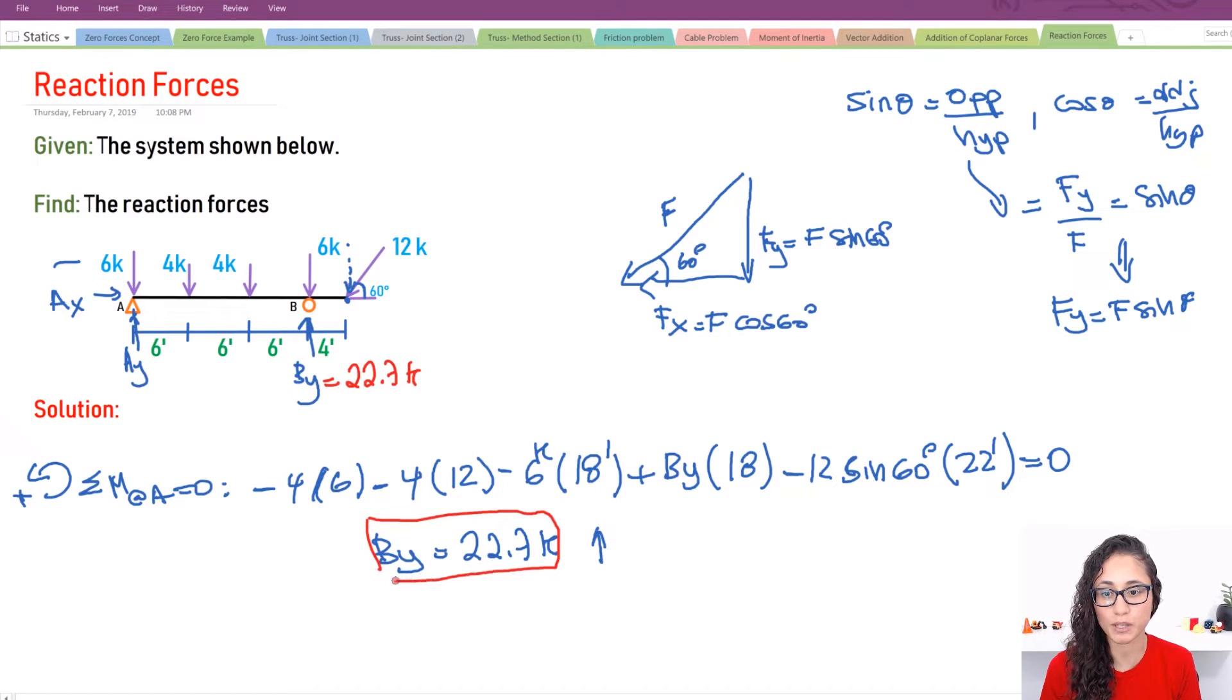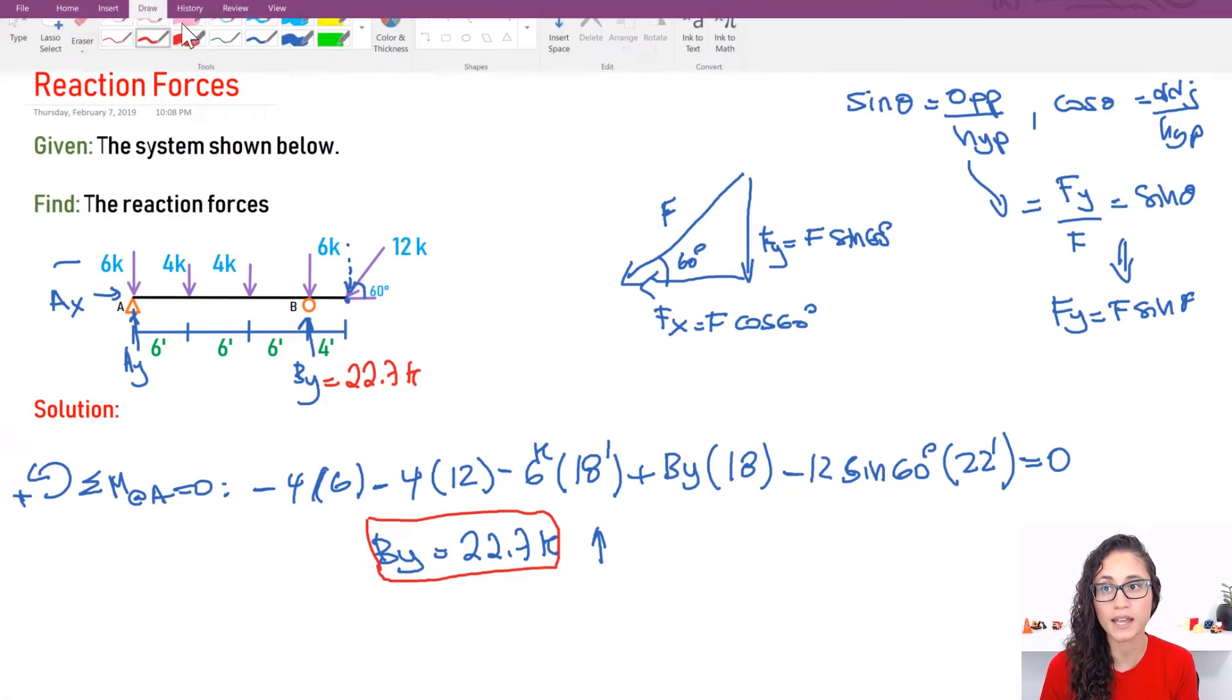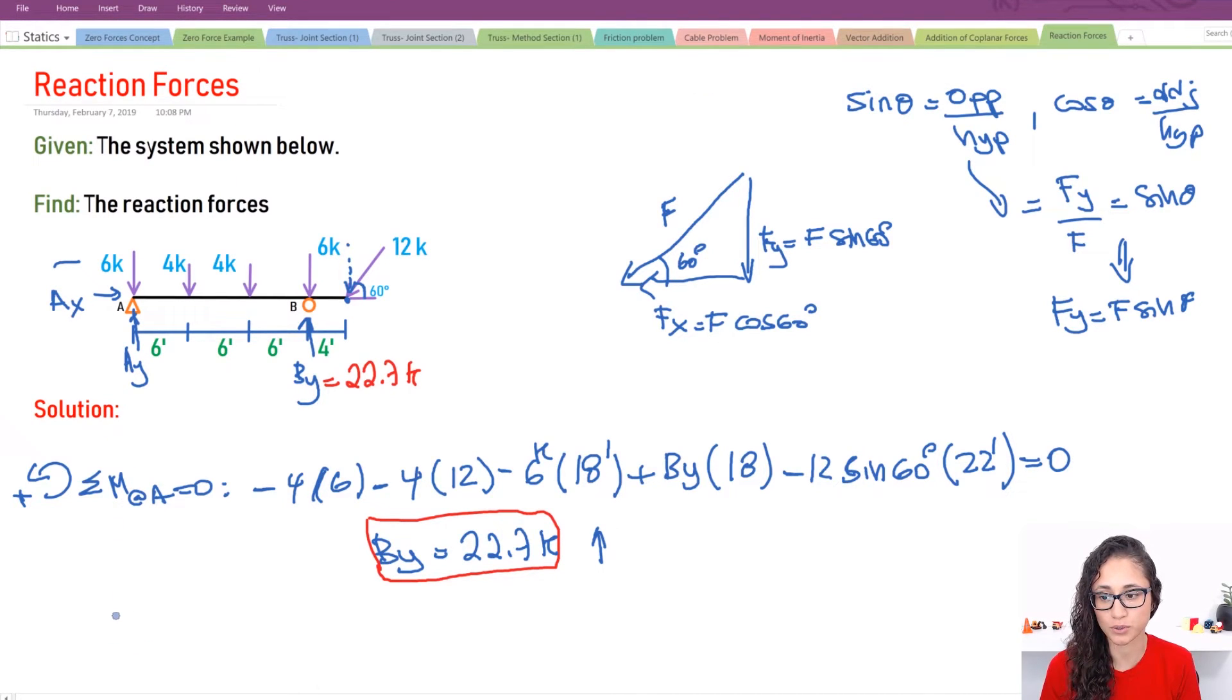Now we can do the summation of the forces on the Y and calculate for Ay. So let's do that. So we're going to pick this to be our positive sign. And also I picked Ay going positive. So that's just an assumption we made, Ay. Now, if the answer comes out to be negative, then I have to switch my sign. But if it comes out positive like By, that means we assumed it correct. I hope that makes sense guys. Okay. So I have Ay plus By because they're both going up. So they're both going to be positive.